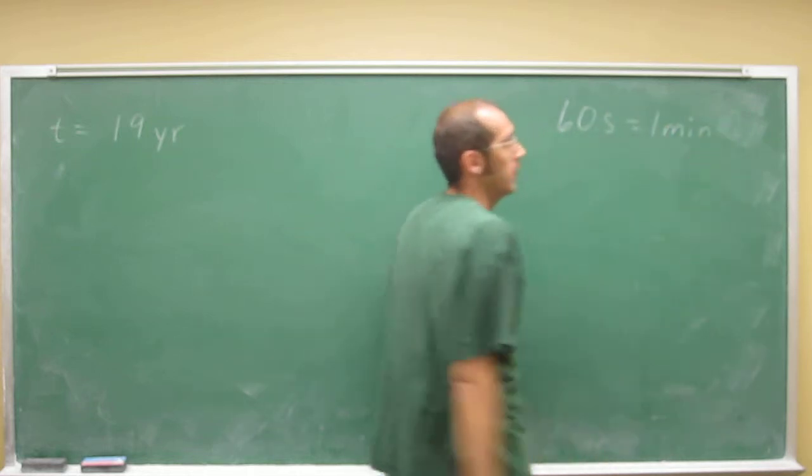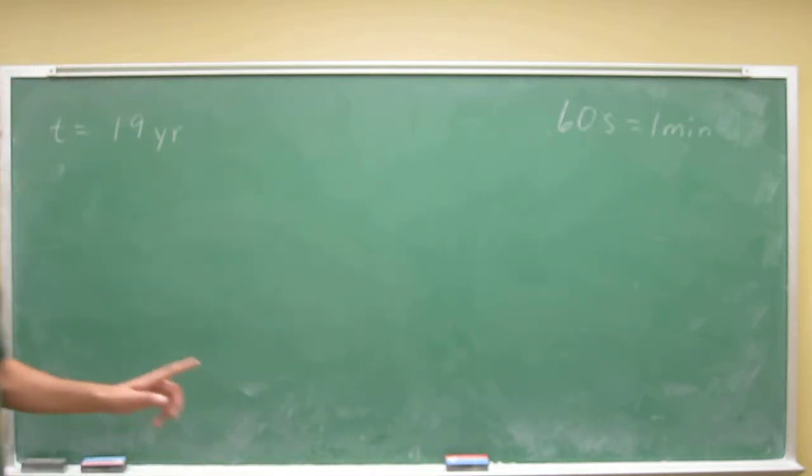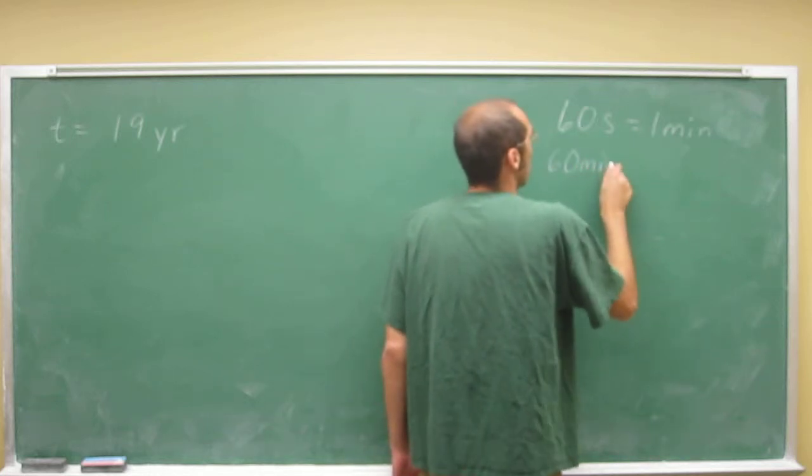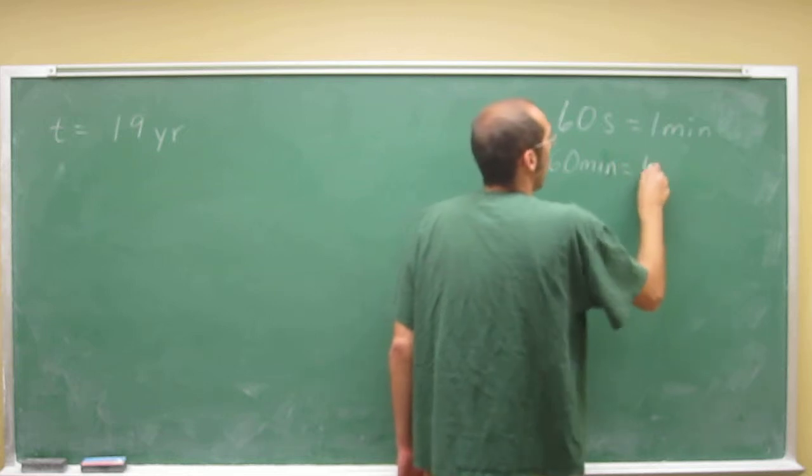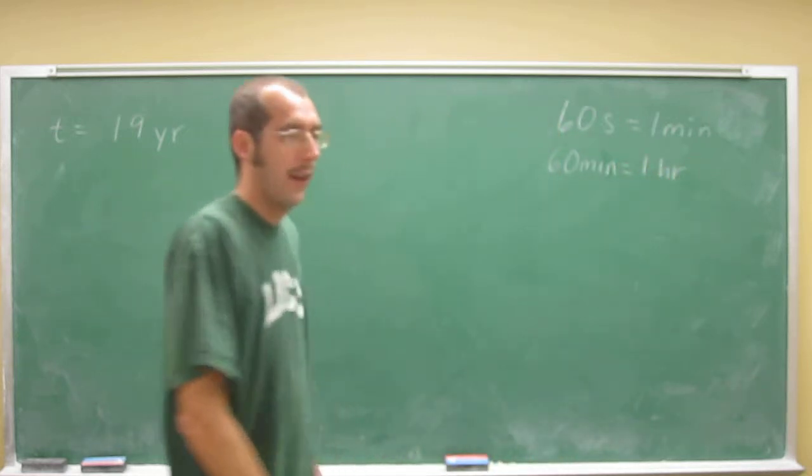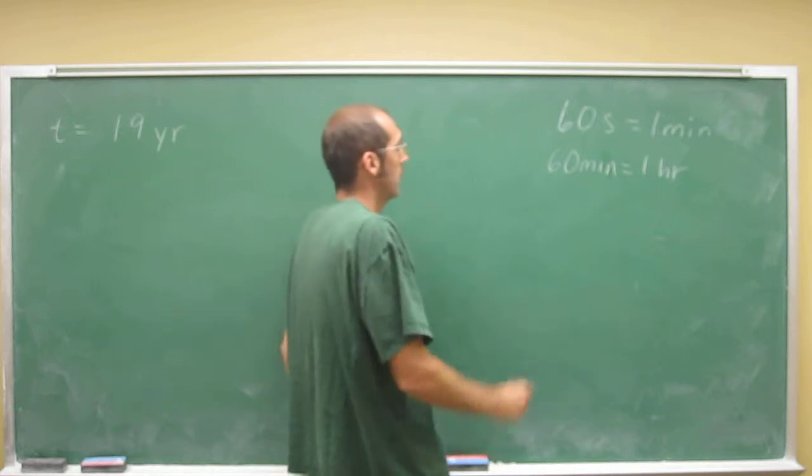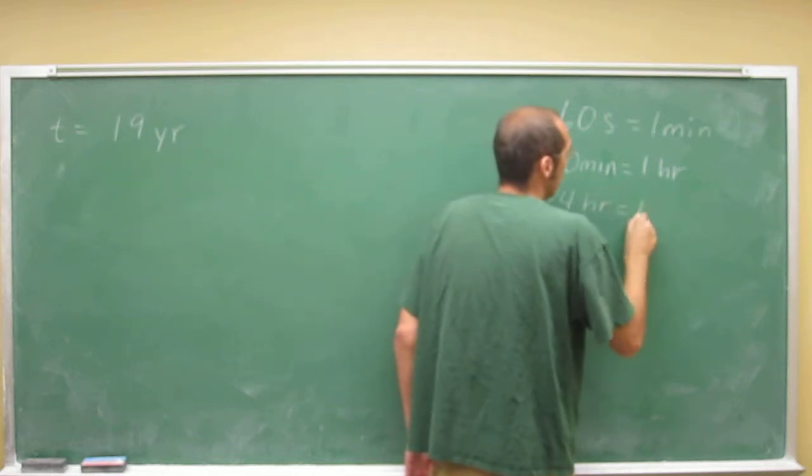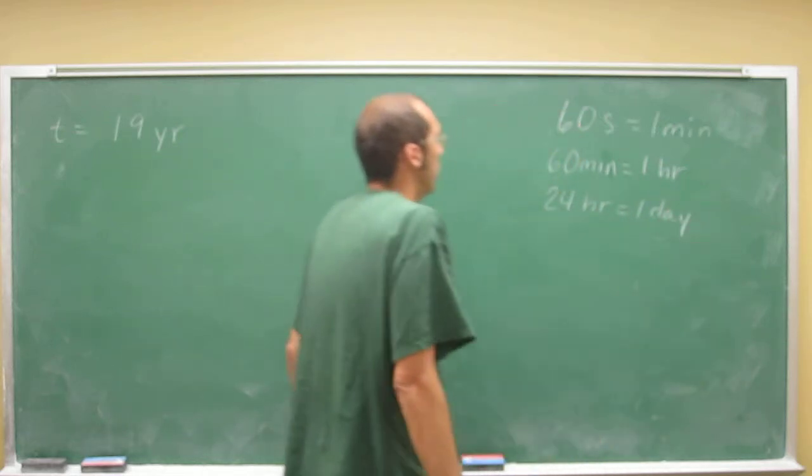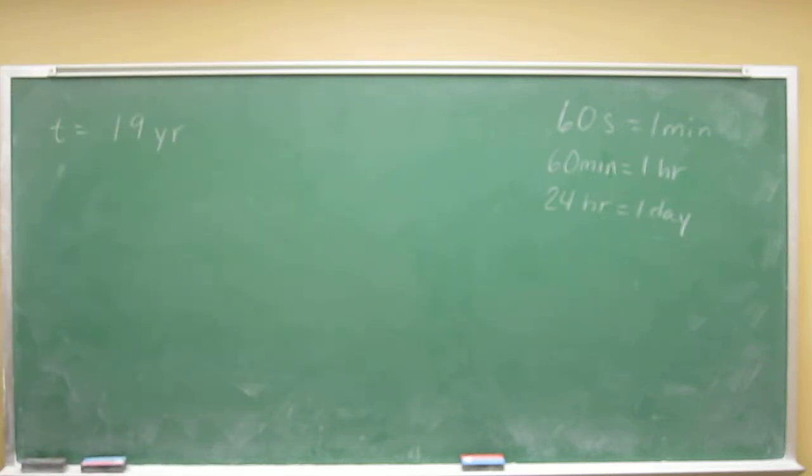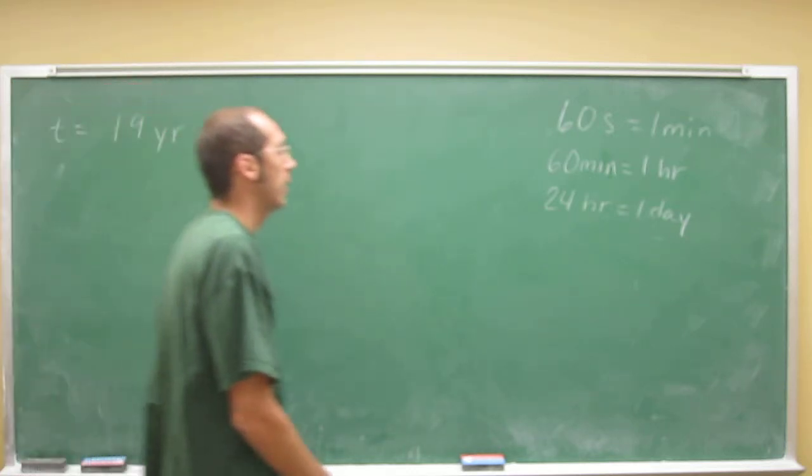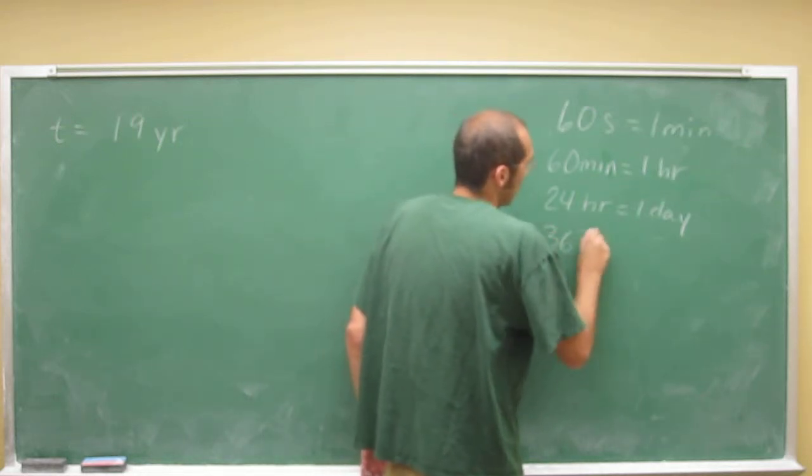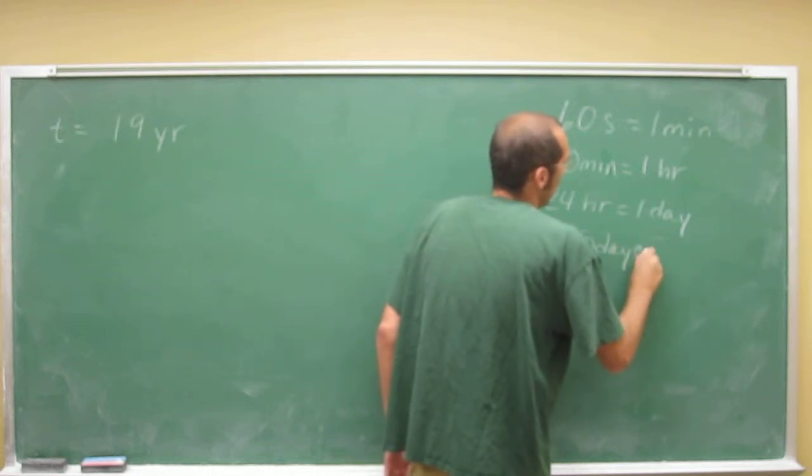You know some other ones. You can go from a minute to an hour. There are 60 minutes in one hour. You also know days. 24 hours in one day. And unless it's a leap year, which we won't count, you know how to go from days to years. There are 365 days in one year.